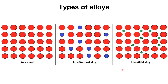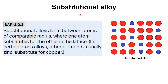A substitutional alloy is made when two types of atoms of almost similar sizes are mixed. For example, brass is made up of zinc and copper, where the primary metal is copper. The red dots represent copper and the blue dots represent zinc. Zinc atoms occupy the positions of copper atoms throughout the alloy. Because the sizes of zinc and copper are similar, a substitutional alloy is formed.